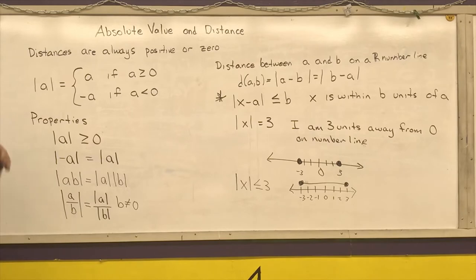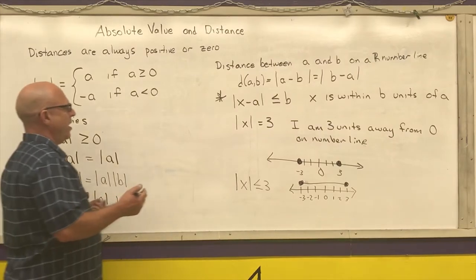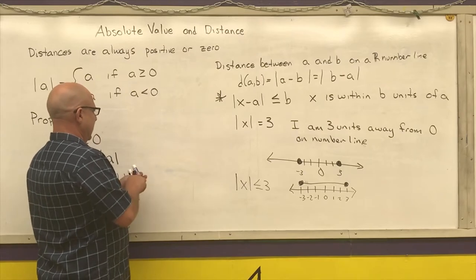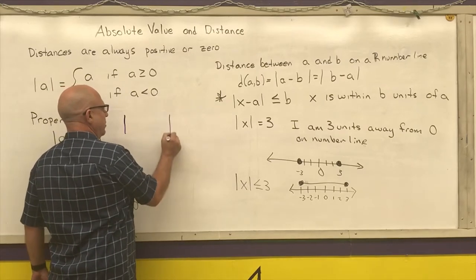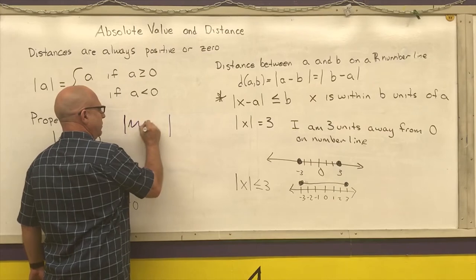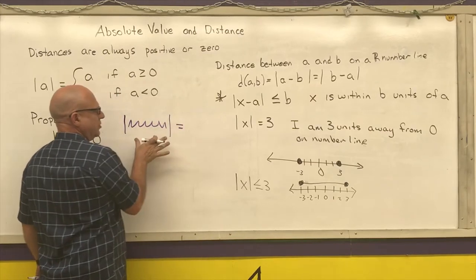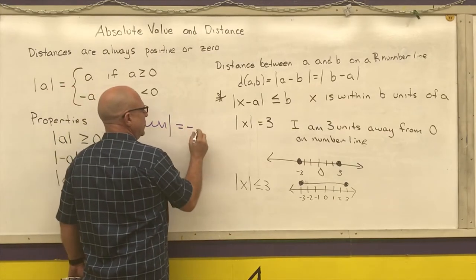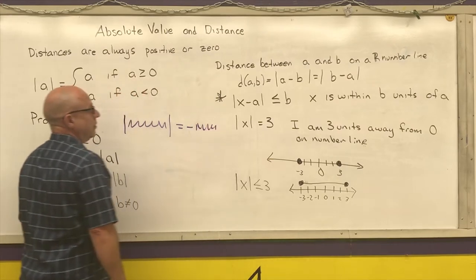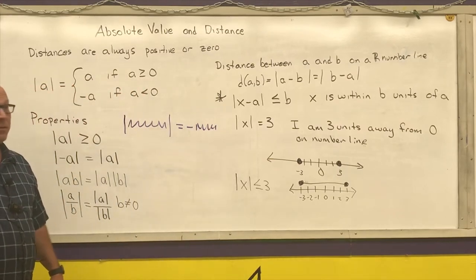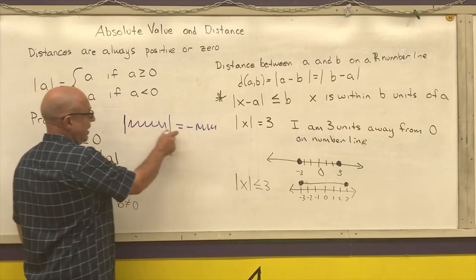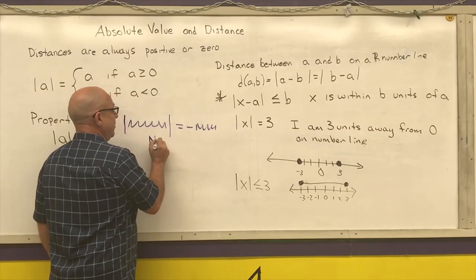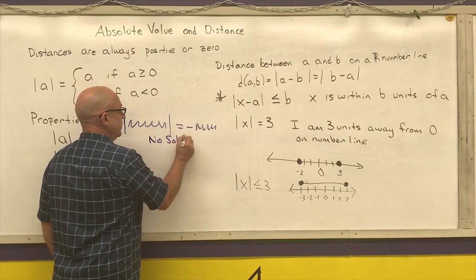One thing that I want to point out is if you're solving an absolute value problem you need to have two solutions unless your value is zero. If you ever end up with anything that looks like the absolute value of anything within absolute value bars is equal to some negative anything, it's impossible. It's impossible for an absolute value to equal a negative number so you would write down no solution in this case.